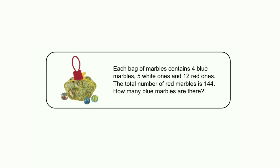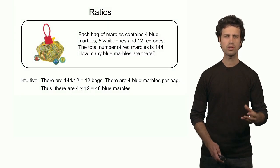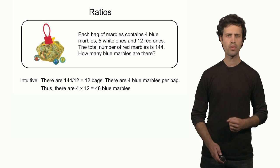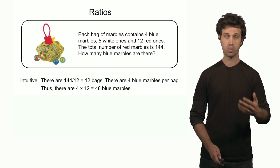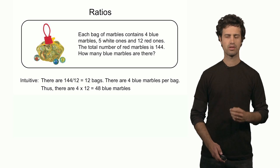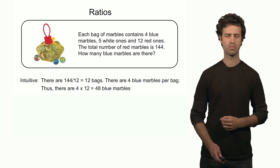Let's consider a bag of marbles. Each bag contains 4 blue marbles, 5 white ones, and 12 red ones. It is also given that there are 144 red marbles in total. How many blue marbles are there? Intuitively, you could say the following: there are 144 red marbles, each bag contains 12 red marbles, that means 144 divided by 12 — there are 12 bags. Each bag contains 4 blue marbles, that means 4 times 12 equals 48 blue marbles.